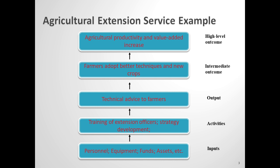Once we've delivered the output — namely the technical advice to farmers — we expect to achieve outcomes. The most immediate outcome is that farmers hopefully adopt better agricultural techniques, including, where appropriate, new crops. And as a consequence of achieving these intermediate outcomes, we hope to achieve the higher level outcomes of increased agricultural productivity and value added.